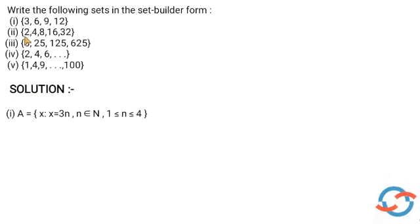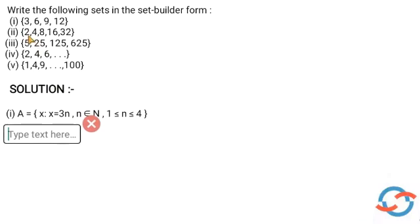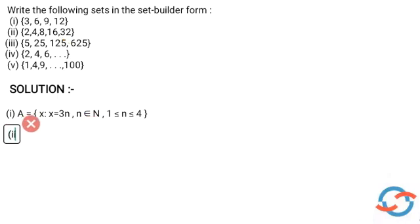The next question is the set {2, 4, 8, 16, 32}. We need to identify the common property. 4 is 2 squared, 8 is 2 cubed, 16 is 2 raised to 4, and 32 is 2 raised to 5. So the common property is 2 raised to n.